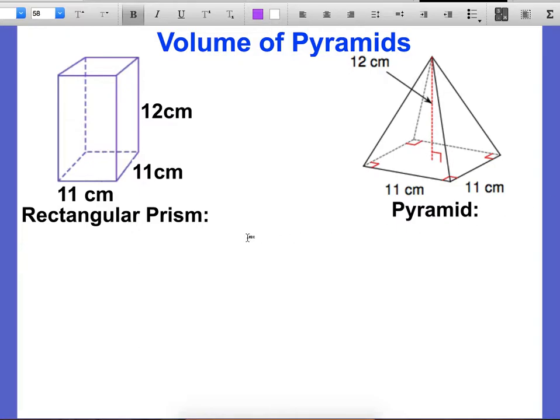So this rectangular prism, the bottom is a square and it's 11 by 11. This pyramid, the bottom is a square and it's 11 by 11. The height going straight up is 12 centimeters. The height going up of this is 12 centimeters.